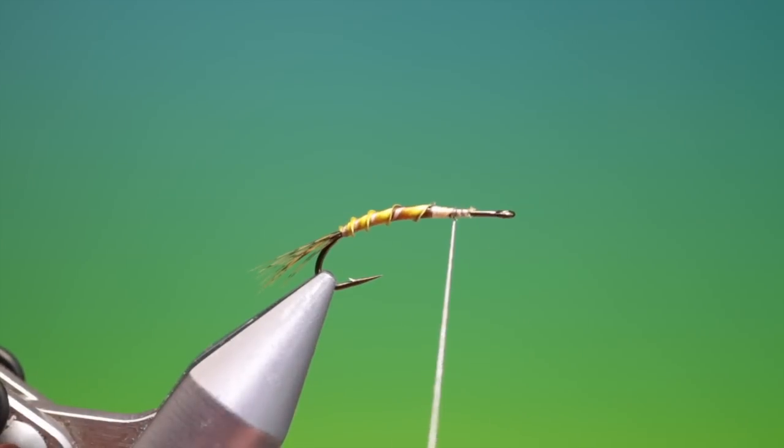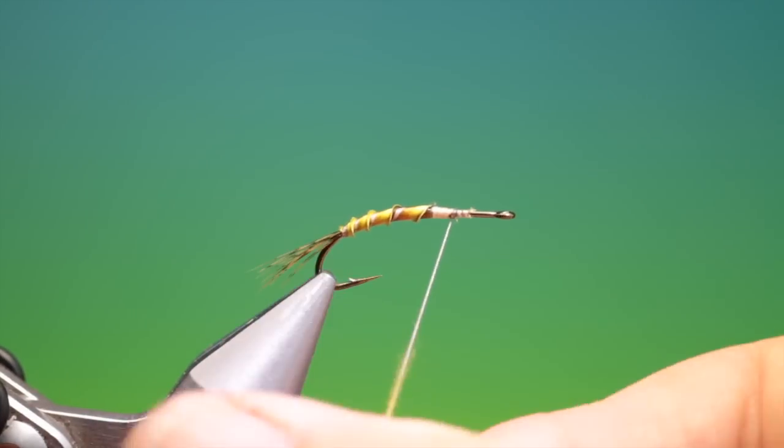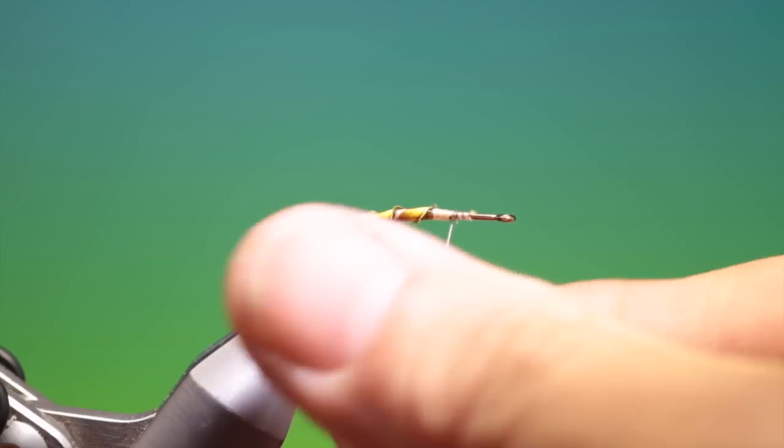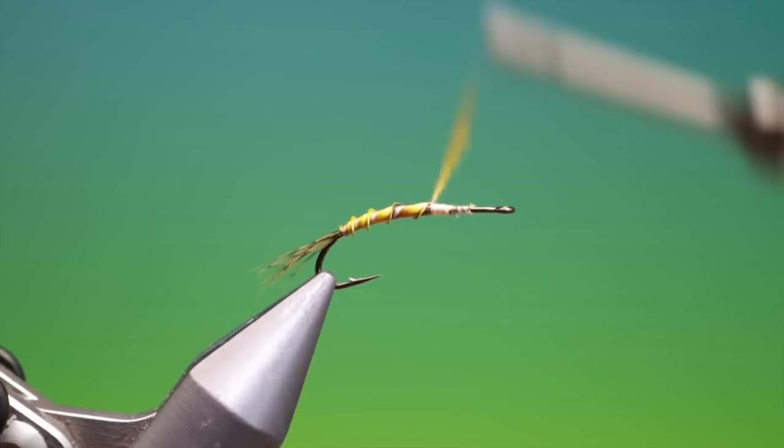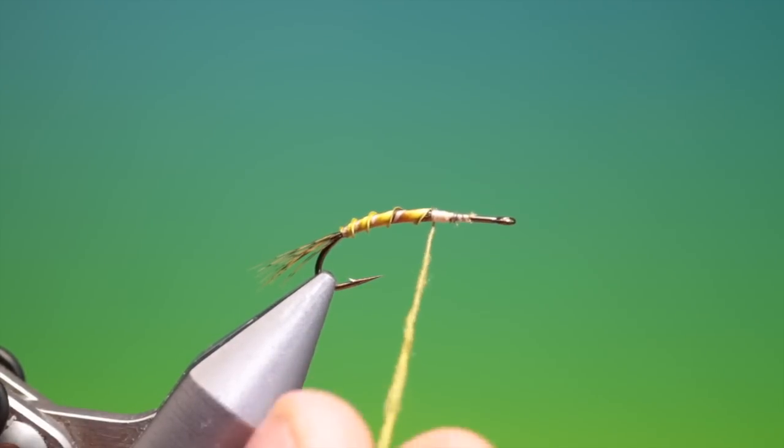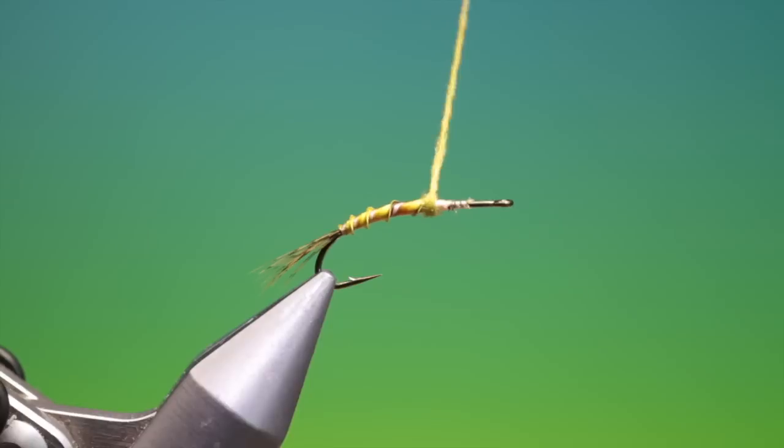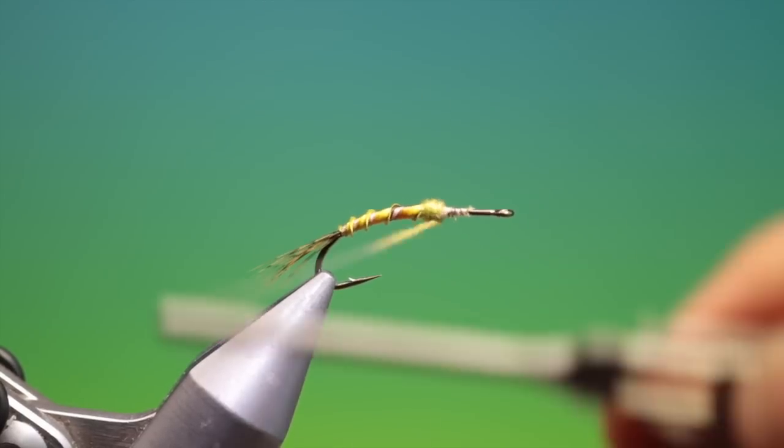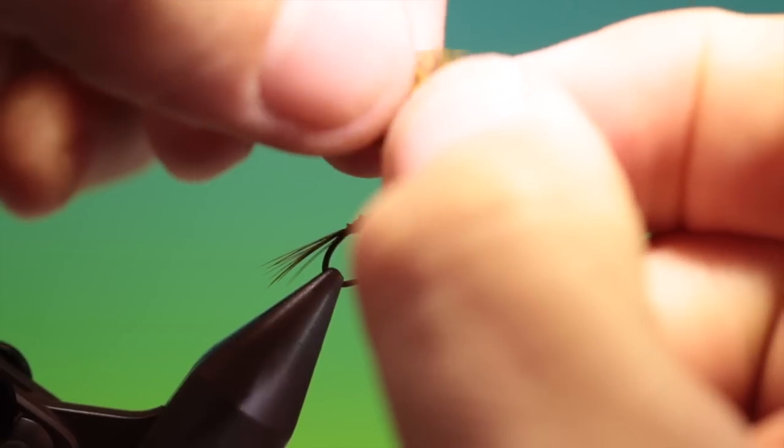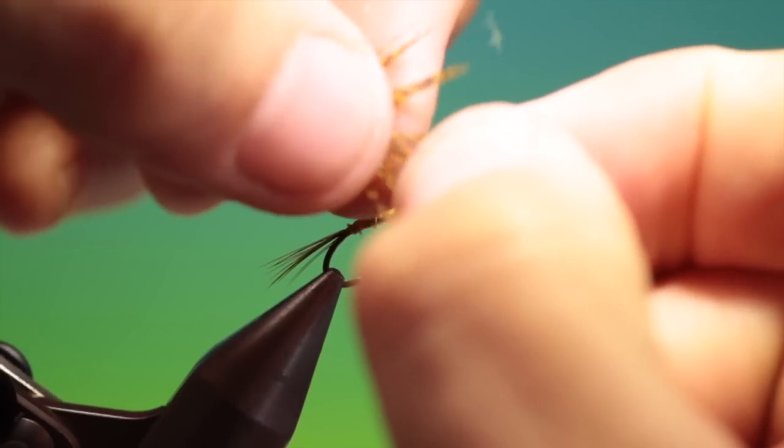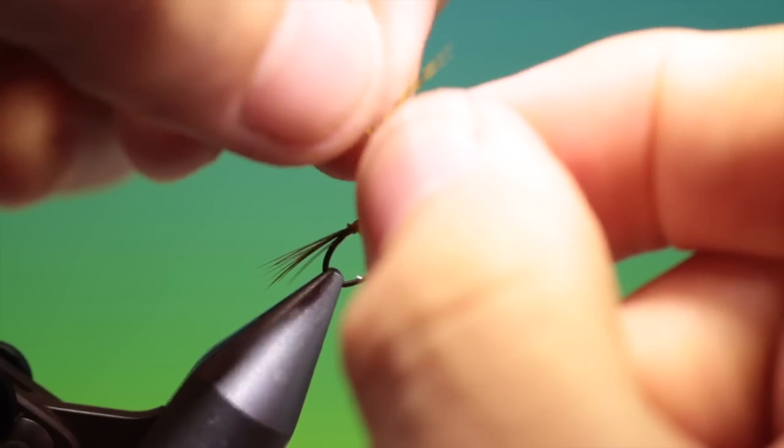We need a tiny bit of olive superfine dubbing. I'll wind that back again and just catch that in. And then I can wind it up. Excellent. We need a light yellow dyed partridge hackle.